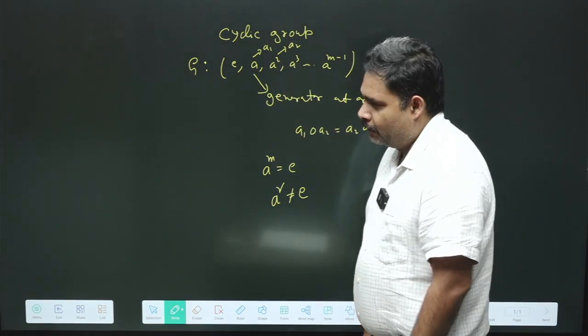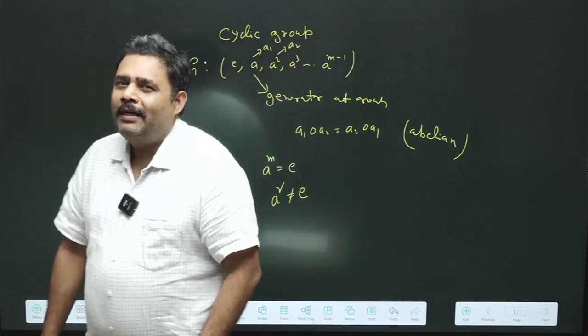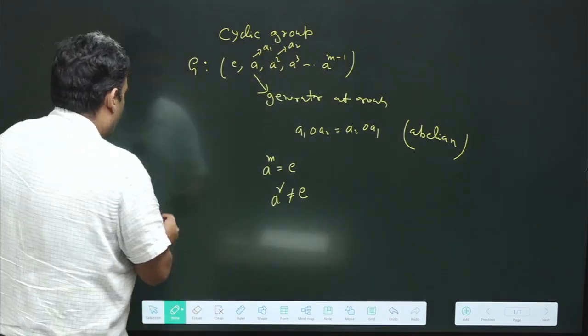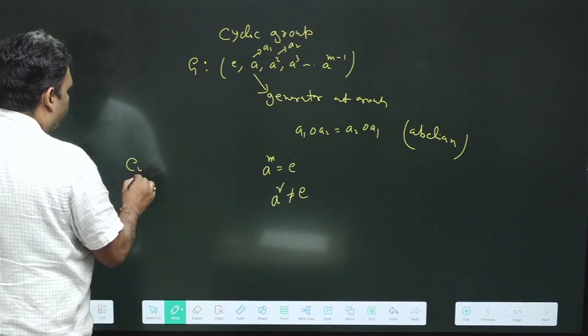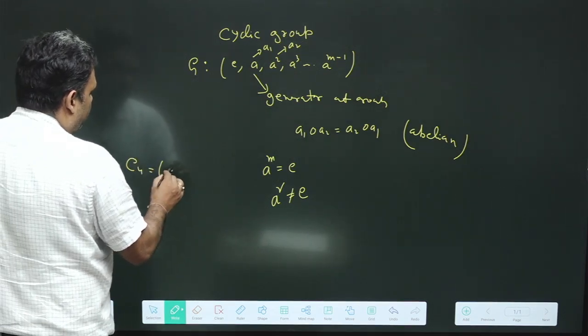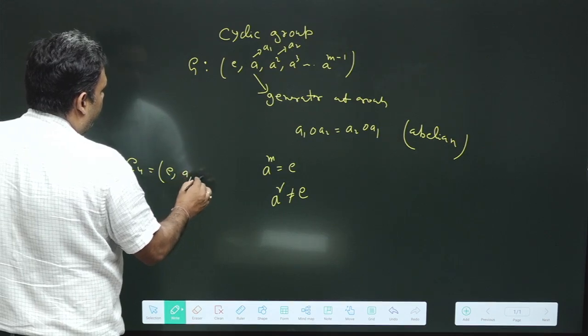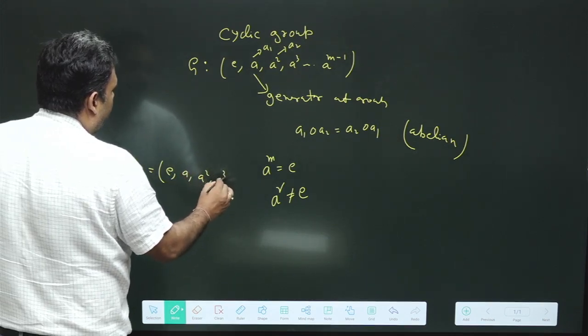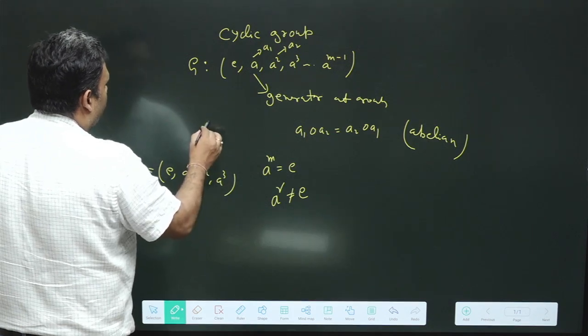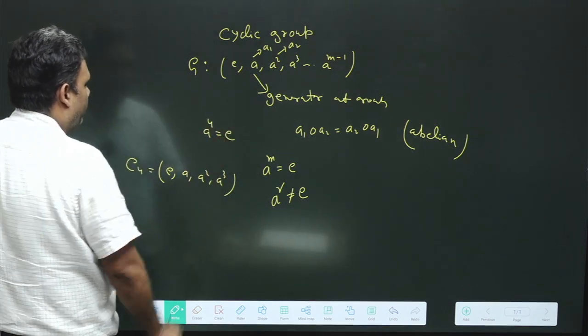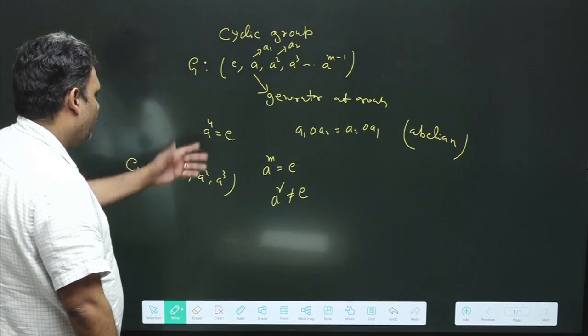For example, let us try the C4 group. We have C4 group which is E, A, A square, A cube. And here I can assume that A to the fourth equals identity. So this is the definition of C4 group.